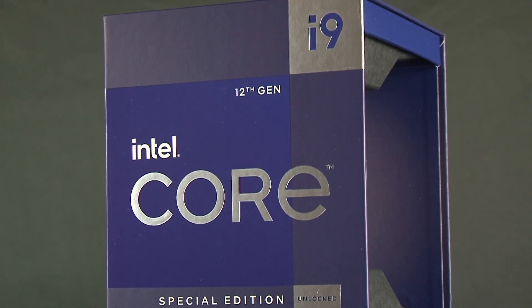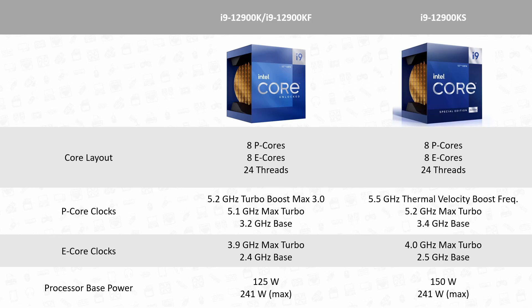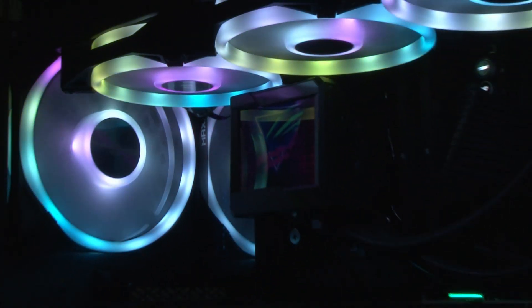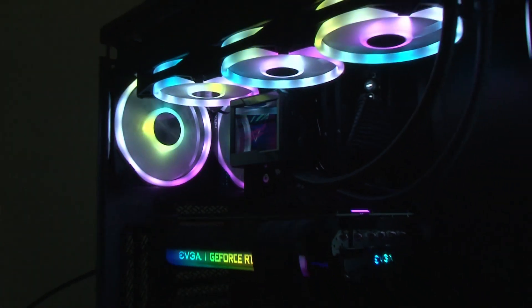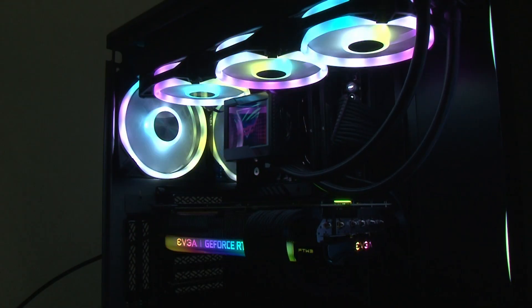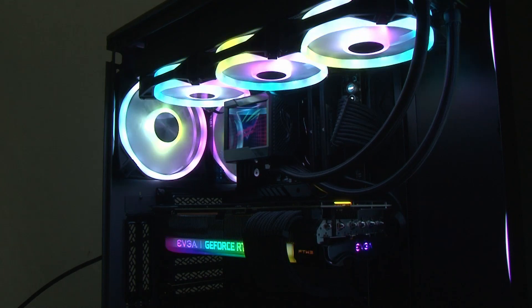With higher clock frequencies comes an increase in heat. The i9-12900KS adds about 25W in terms of PBP (processor base power) vs the regular K model, which means it is highly recommended to have a decent CPU cooler when using this processor.